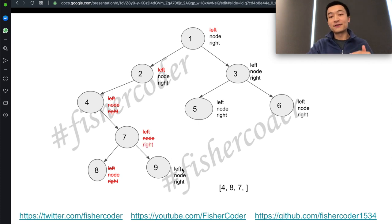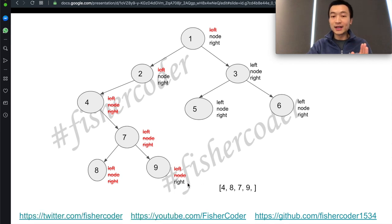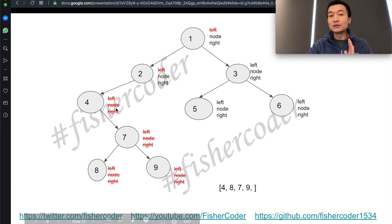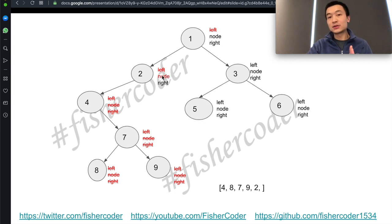Node 9 will attempt to visit its left child — it doesn't have anything. So we go to node 9 itself and add 9 into the list. Then we cross node 9 out. We'll attempt to access the right child of 9 — it doesn't have anything. We've now gone through all of the right side of the node with value 4. We go back and add 2 into the list. Then we attempt to access the right side of 2, which doesn't have anything.